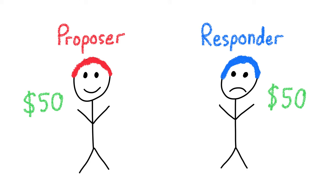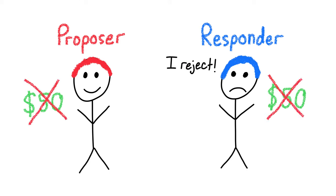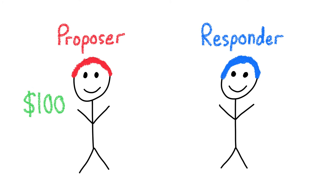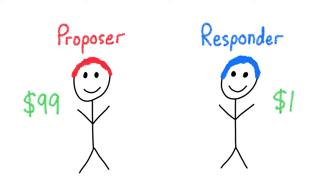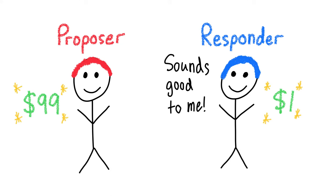However, if the responder rejects the offer, then both the proposer and responder lose all the money. Traditional economic theory would tell us that the proposer would follow a behavior called rational maximization, which is when you simply take more for yourself because you can, and give the responder as little as possible. Additionally, economic theory would predict that the responder would accept any offer, since any offer is greater than zero, which is what they currently have.